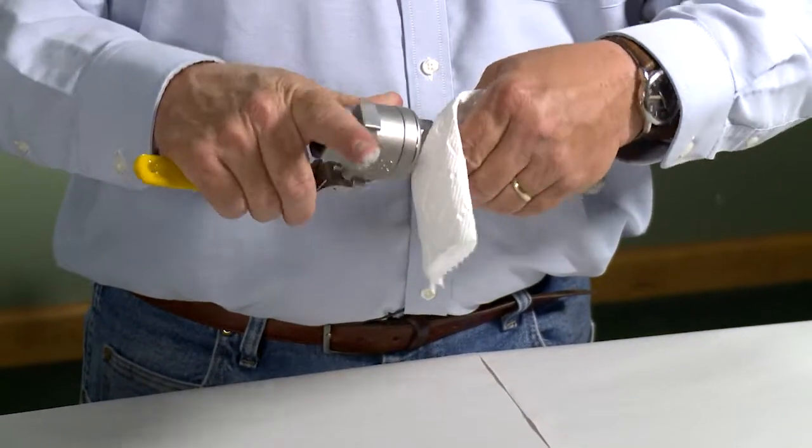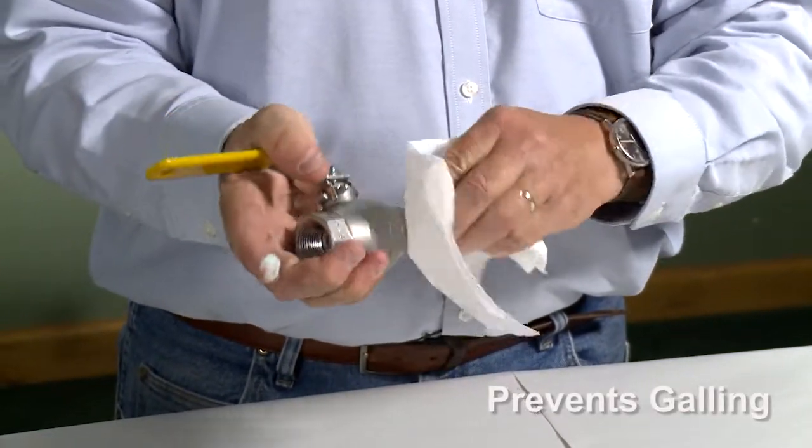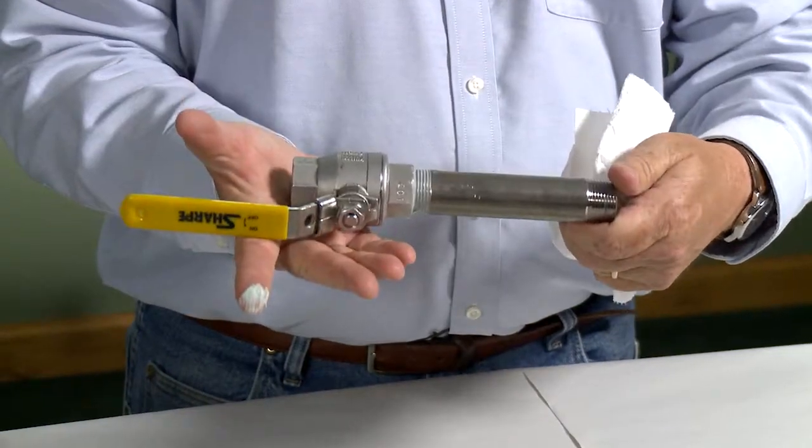After it's assembled, just take a rag and remove the excess. LOX8 prevents galling on the stainless steel fittings and allows for easy disassembly later on.